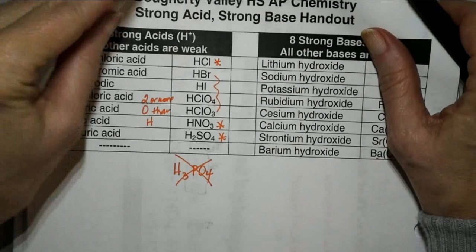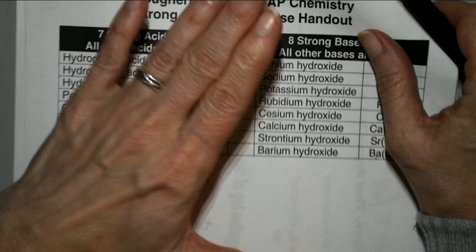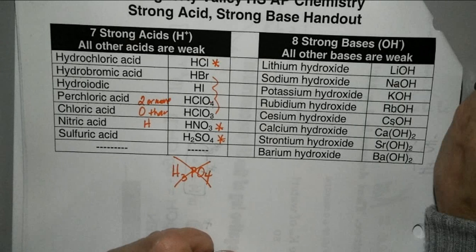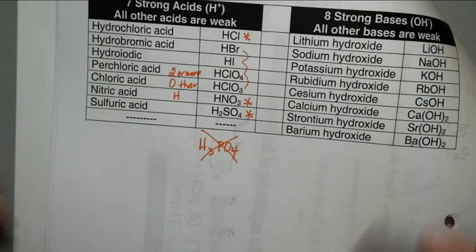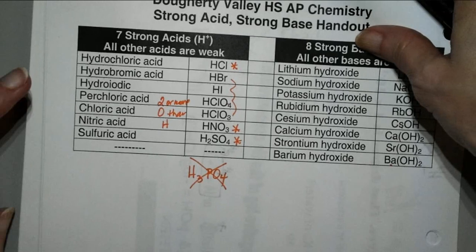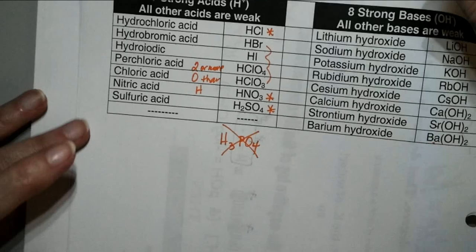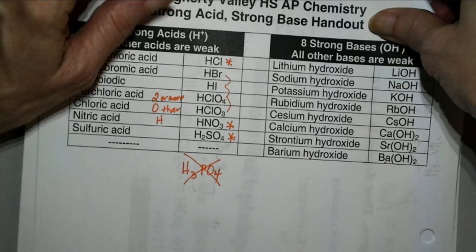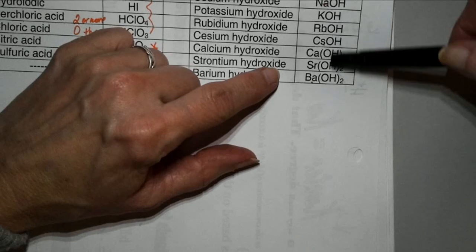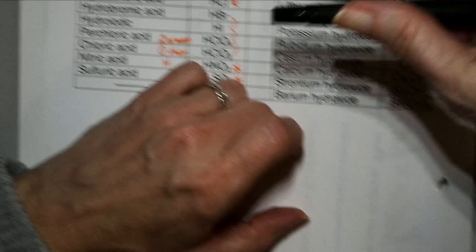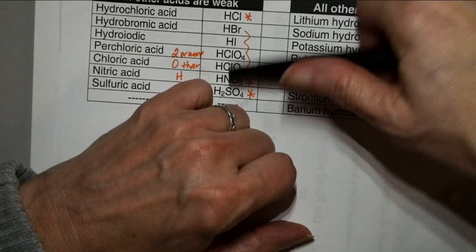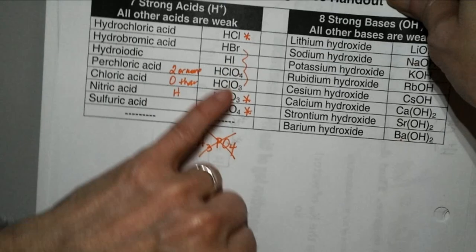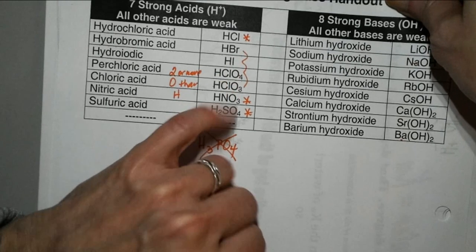Some of them are easy because the most common acids we use are going to be the ones listed — hydrochloric, sulfuric, nitric. Those three big ones we use a lot. They also like to include some less common ones. You can guarantee they're going to use ammonia, which is a weak base, and acetic acid, which is a weak acid. They also like to throw in some of the chloric acids — the ones with CLO.